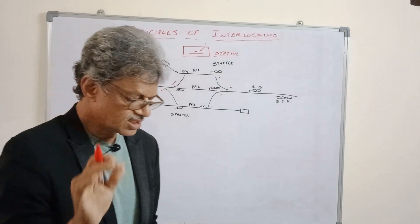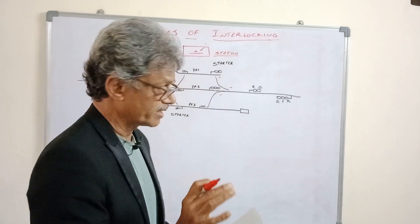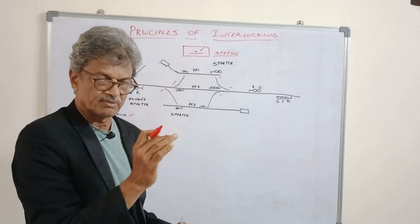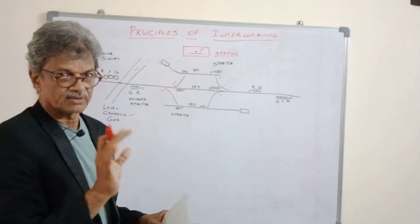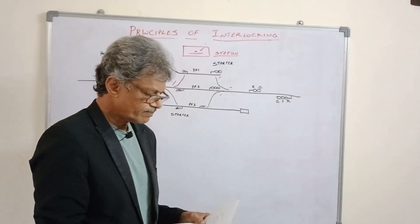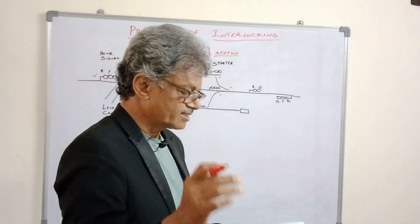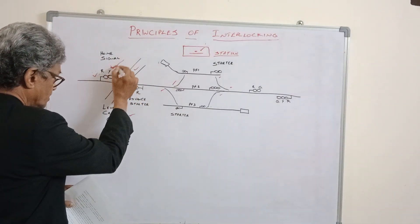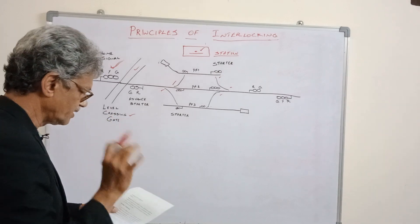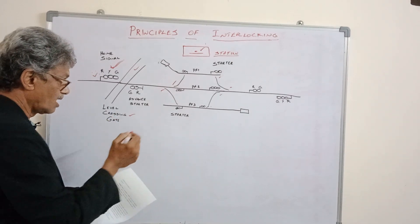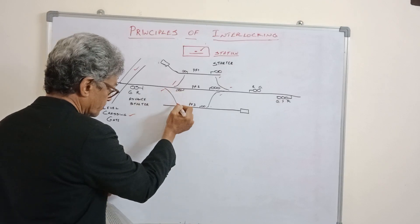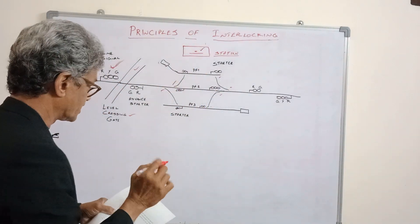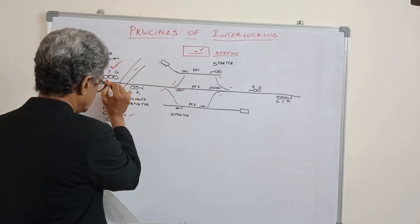Now coming to the essentials of interlocking. The first essential is: it shall not be possible to take off a signal unless all points are correctly set. For example, a signal cannot be cleared unless all points are in their correct position and the level crossing gate is closed against road traffic.